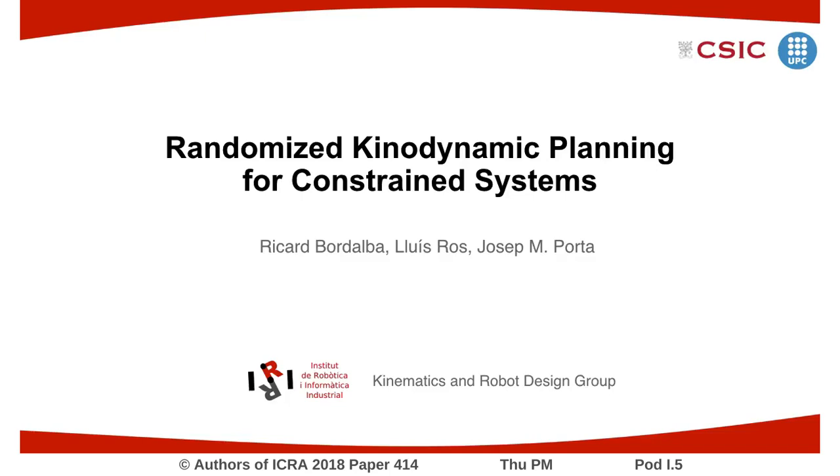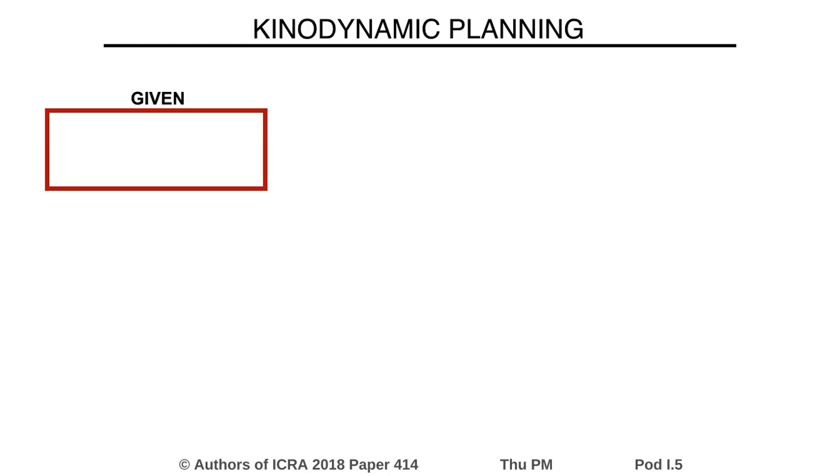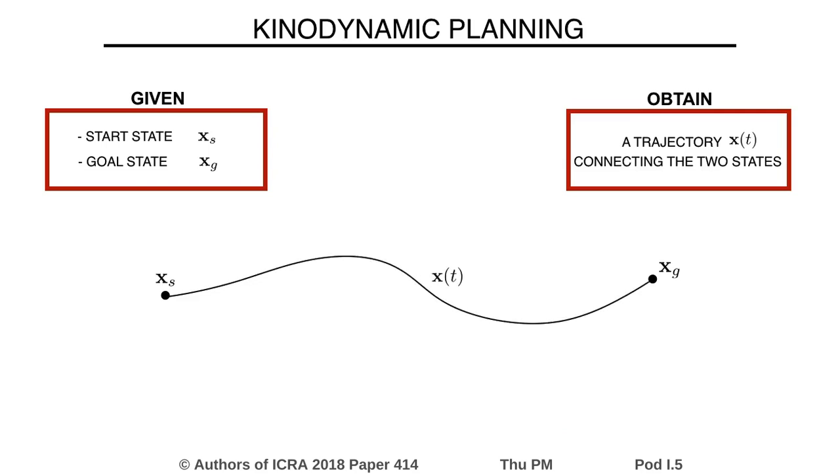This paper presents a randomized kinodynamic planner for constrained robotic systems. Given a start and goal state of the robot, the planner must obtain a state-space trajectory connecting these two states while satisfying all kinematic and dynamic constraints of the system.